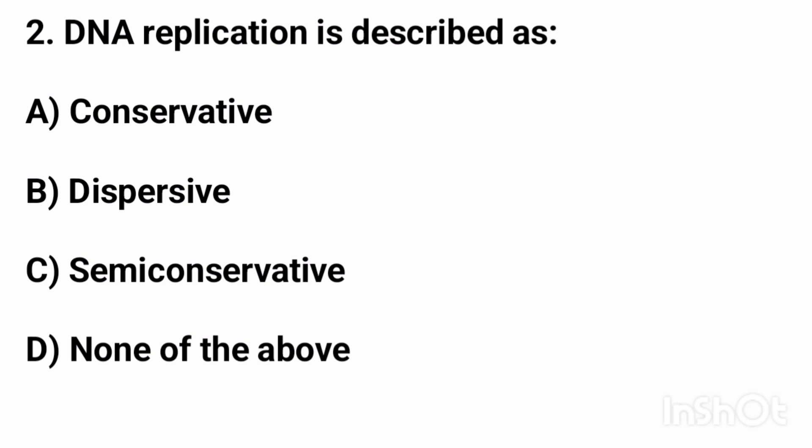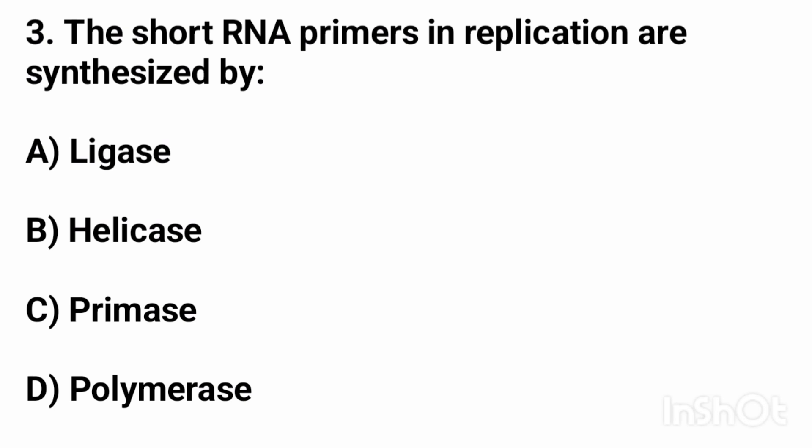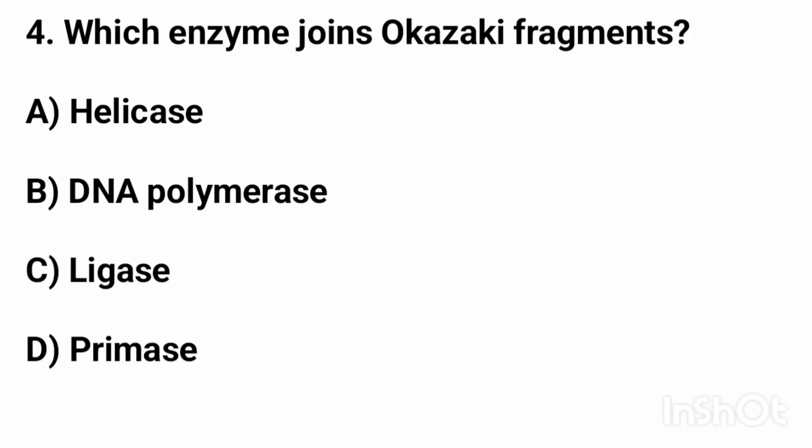Question number two: DNA replication is described as? The right answer is option C, semi-conservative. Question number three: the short DNA primers in replication are synthesized by? The right answer is option C, primase.